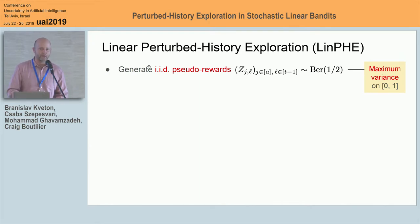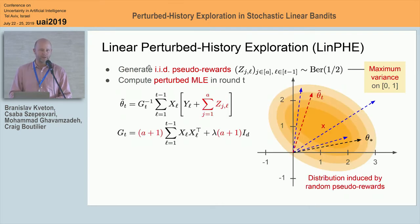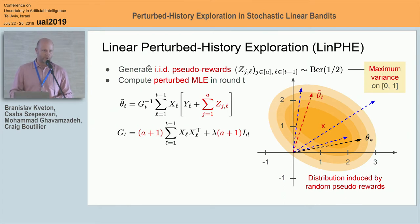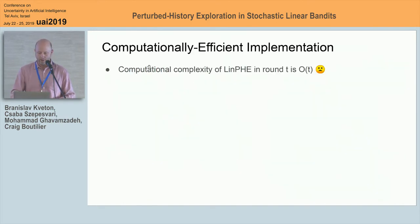Let's step back to the linear bandit and talk about how to implement this. It's very simple. At the beginning of each round, we generate A times T minus one randomized rewards. Because we're looking at a linear bandit where rewards are bounded on zero-one and we want high-variance noise, the maximum variance random variable in this range is a Bernoulli one-half. So we generate pseudo-rewards which are Bernoulli one-half. We then compute the perturbed maximum likelihood estimator: rather than learning a regression model with just the original rewards, we add to each original reward the sum of its perturbed rewards, and multiply the sample covariance matrix by A plus one. Then we pull the arm with the highest expected reward under this perturbed model.